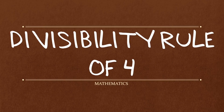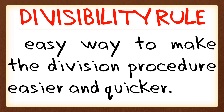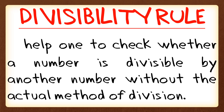In this video, we're going to learn about the divisibility rule of 4. A divisibility rule is an easy way to make the division procedure easier and quicker. It helps one to check whether a number is divisible by another number without the actual method of division.